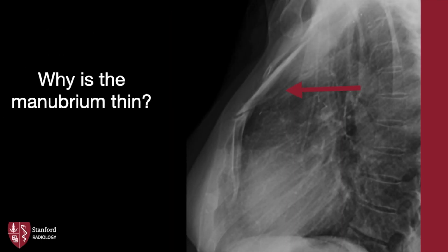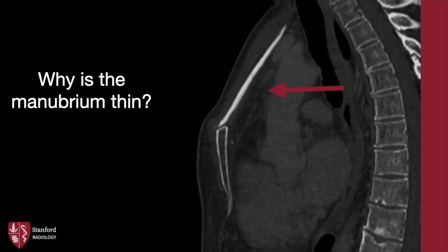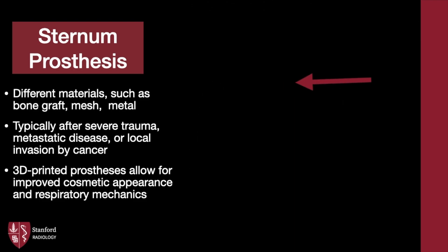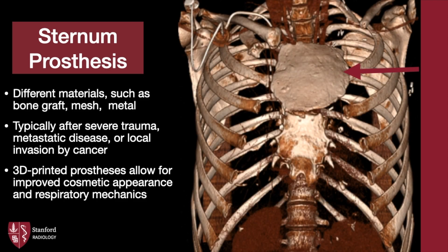We're nearing the end. In this case, why is the manubrium thin? Here's the follow-up sagittal CT. This is a trick question because there is no manubrium — it's actually a sternal prosthesis. This surgery typically occurs after severe trauma, metastatic disease, or local invasion by cancer. Today, with the advent of 3D printing, 3D printed prostheses allow for improved cosmetic appearance and respiratory mechanics.